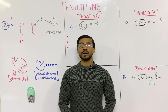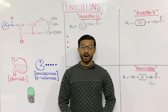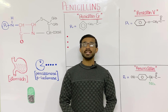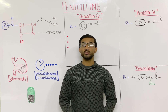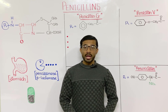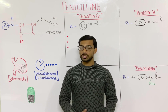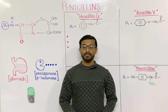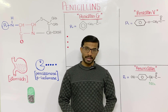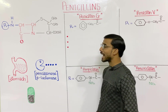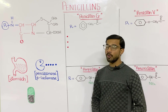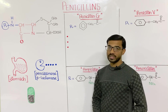Today we are going to discuss the four most important types of penicillin. Penicillin is an antibiotic used against different bacteria. First, we will discuss the general structure of penicillin, and then we will discuss the four most important types. If you look at the structure of penicillin, you will see four most important components.